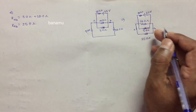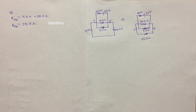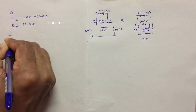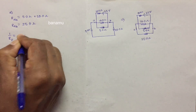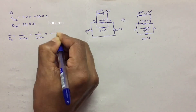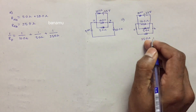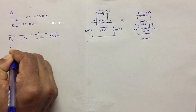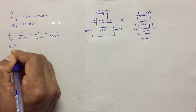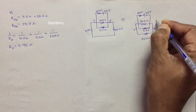The 10 ohm, 5 ohm, and 25 ohm resistances are all connected in parallel. The equivalent parallel resistance Rp is found using: 1/Rp equals 1/10 plus 1/5 plus 1/25. Solving this gives Rp equal to 2.94 ohms, which is the equivalent resistance of the parallel circuit.